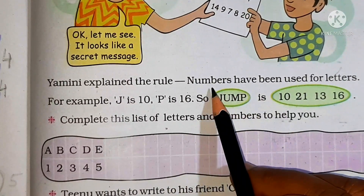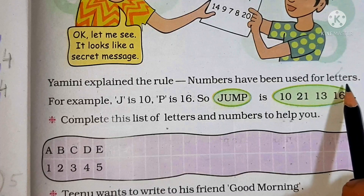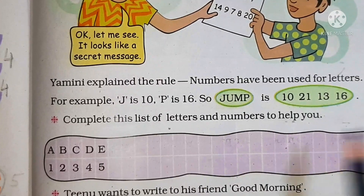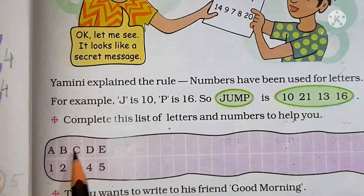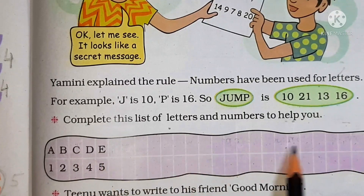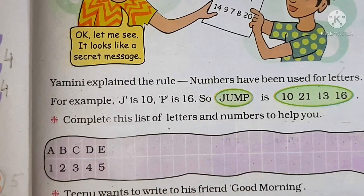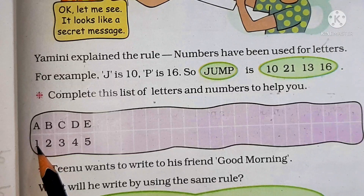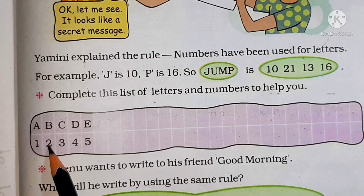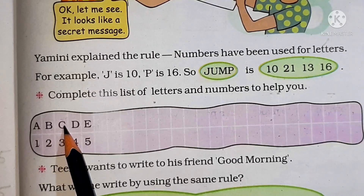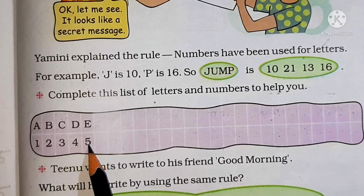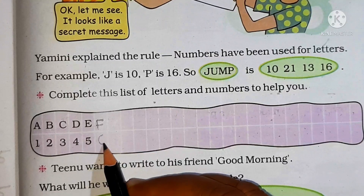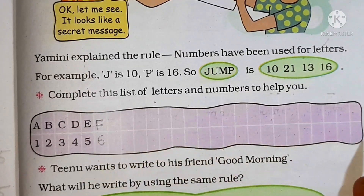Yamini has used numbers for letters. That means for letters A, B, C, D, up to Z, she has used numbers. Few are written for us, and the remaining letters and numbers we will fill up. You can see A is assigned with 1, 2 means letter B, 3 is C, 4 is letter D, 5 is E. So after E, what comes? F. So F will have number 6. In this way, we will complete A to Z.